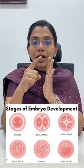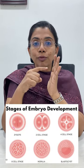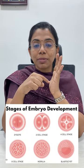Grading is done by the stage of development: 1, 2, 3, 4, 5, 6. Usually stages 4, 5, and 6 will be expanded good embryos, so that will give more success rates.